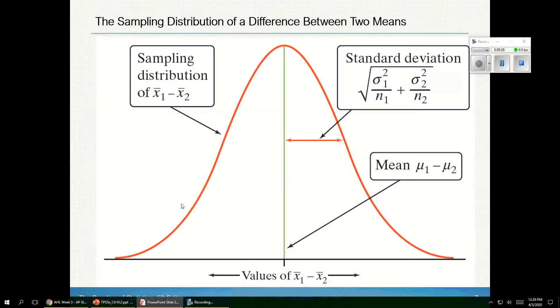So in other words, I end up with a normal distribution. My x-bar 1 minus x-bar 2's fall somewhere along this axis, falling into a shape of a normal distribution, centered at μ₁ minus μ₂, with a standard deviation found by the square root of σ₁ squared over n₁ plus σ₂ squared over n₂.